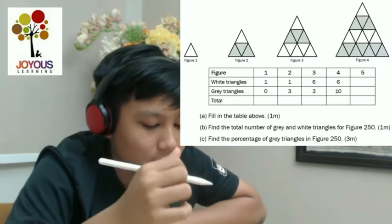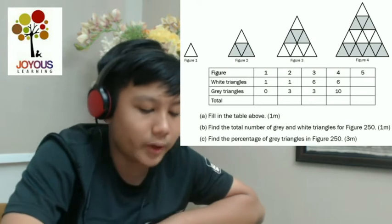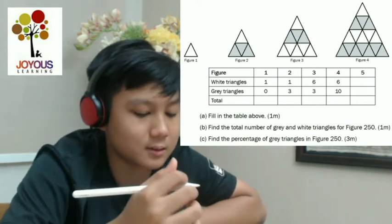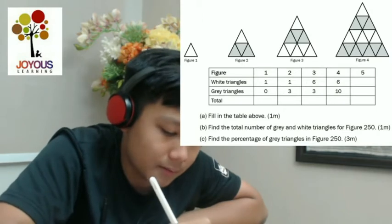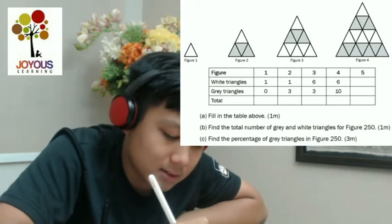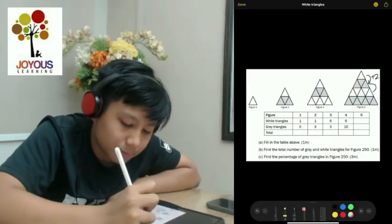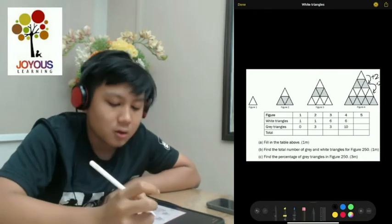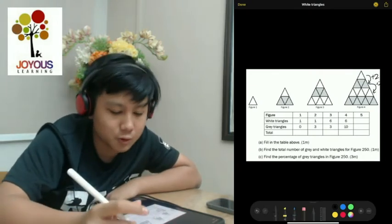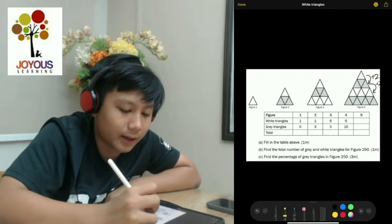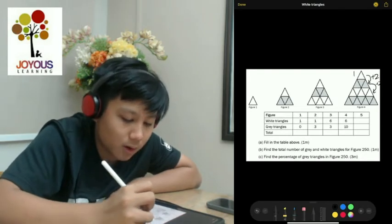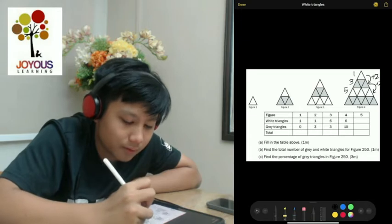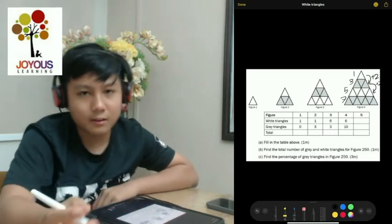The first thing you do when you see questions like this is to find out the pattern. So for example, in this one, every layer adds two more. So just to be safe, you should write the number at the other side, at figure four, since it has the most. So one, three, five, seven.